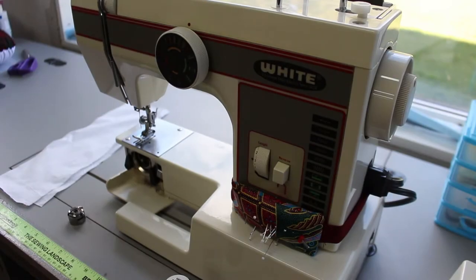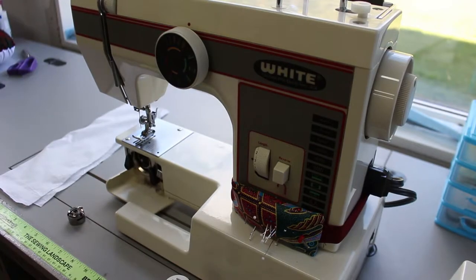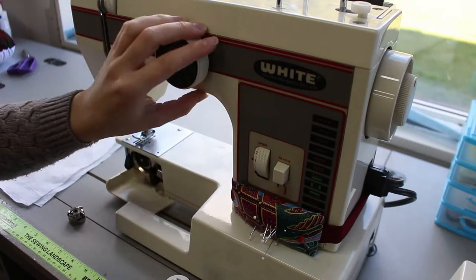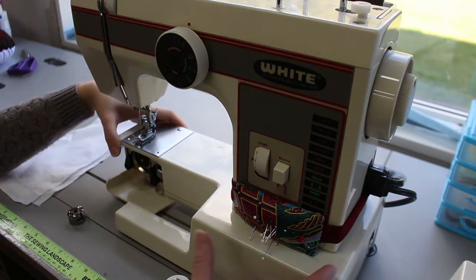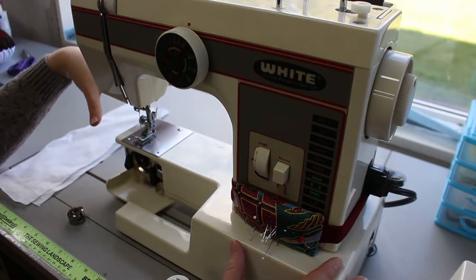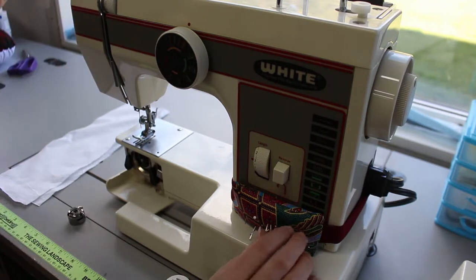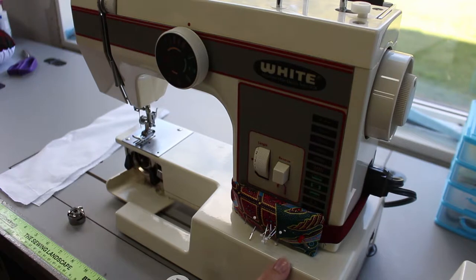I have you guys nice and zoomed in now and I'm first going to tell you about what my machine is. It is a White brand sewing machine and it is model 1477. It is quite an old machine. The base is metal.